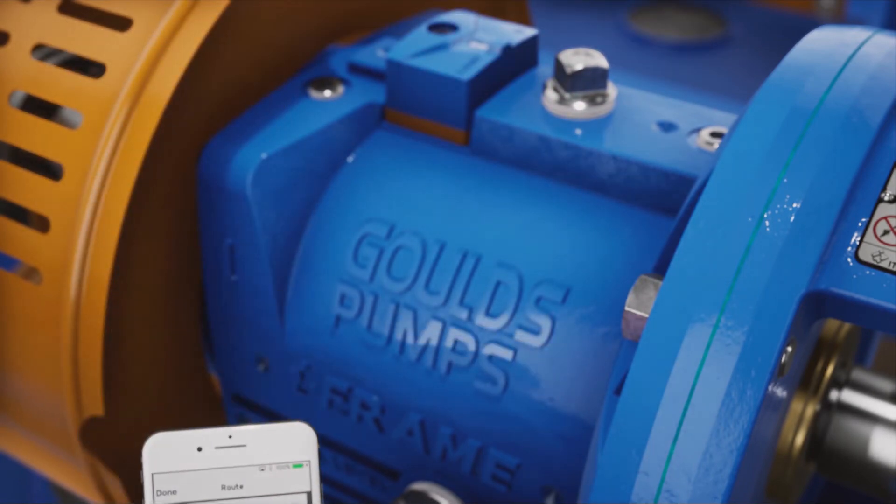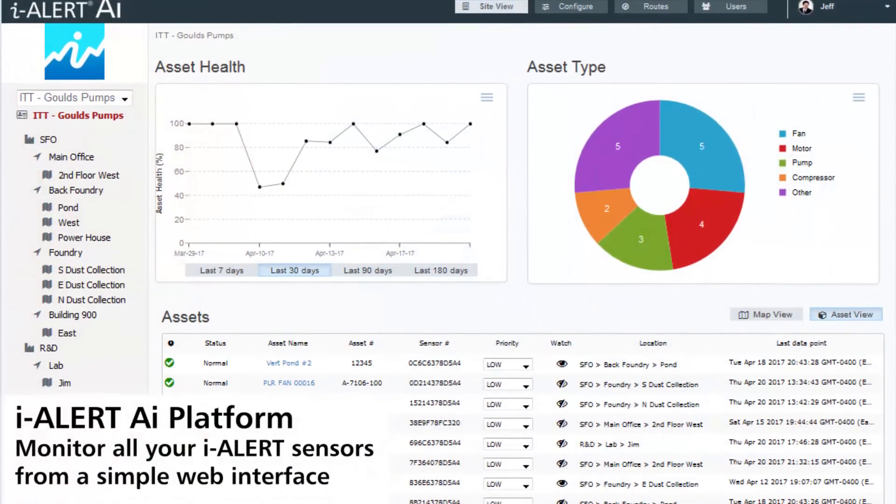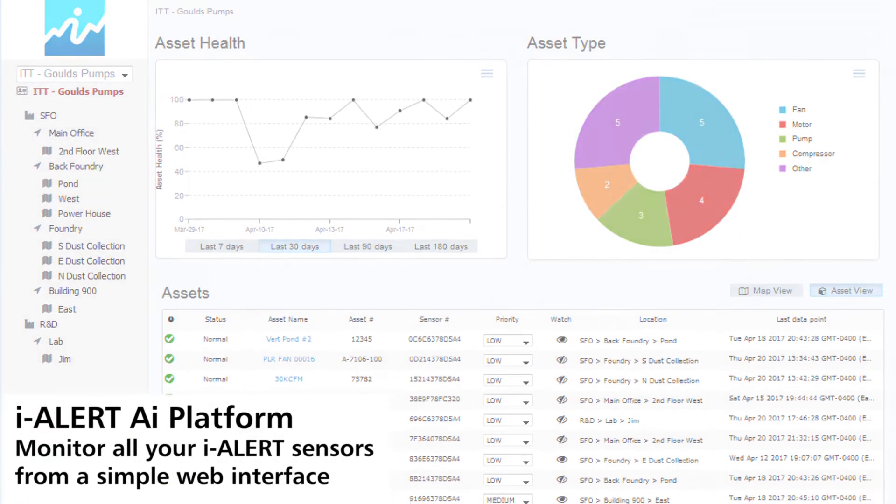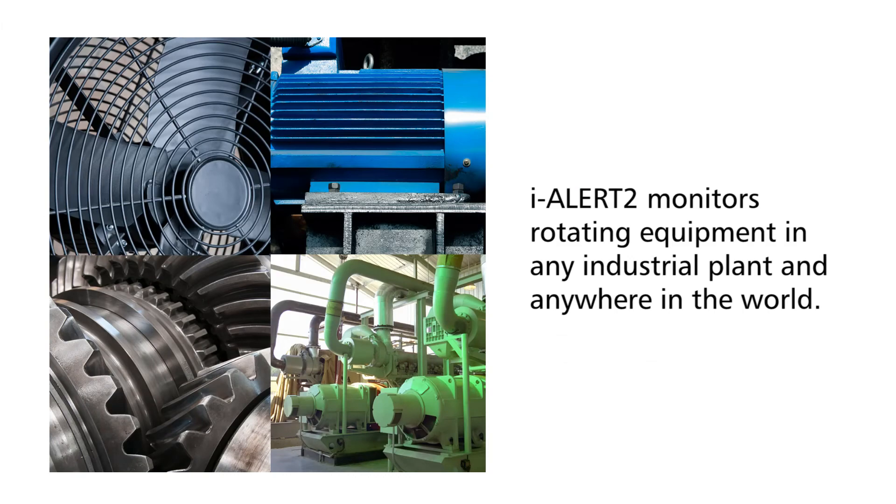All the machine data collected and stored by the EyeAlert 2 is easily accessible through the EyeAlert AI platform for a wide range of rotating equipment in any industrial plant throughout the world.